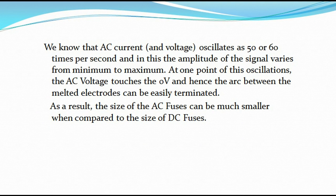We know that AC current and voltage oscillates at 50 or 60 times per second, and the amplitude of the signal varies from minimum to maximum — that is, from a lower to a higher value.